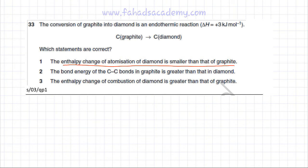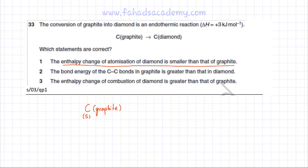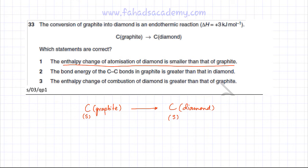Starting with carbon in solid graphite form, it is being converted into carbon in solid diamond form — which is an allotrope. This enthalpy change is +3 kJ per mole, so we know this enthalpy.